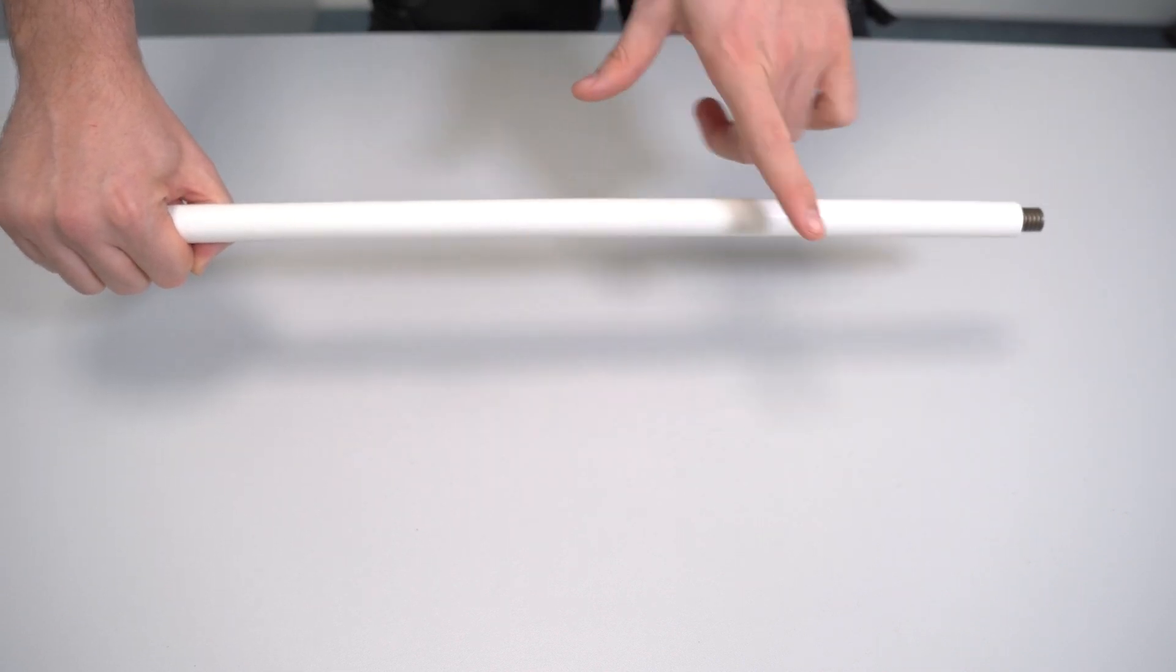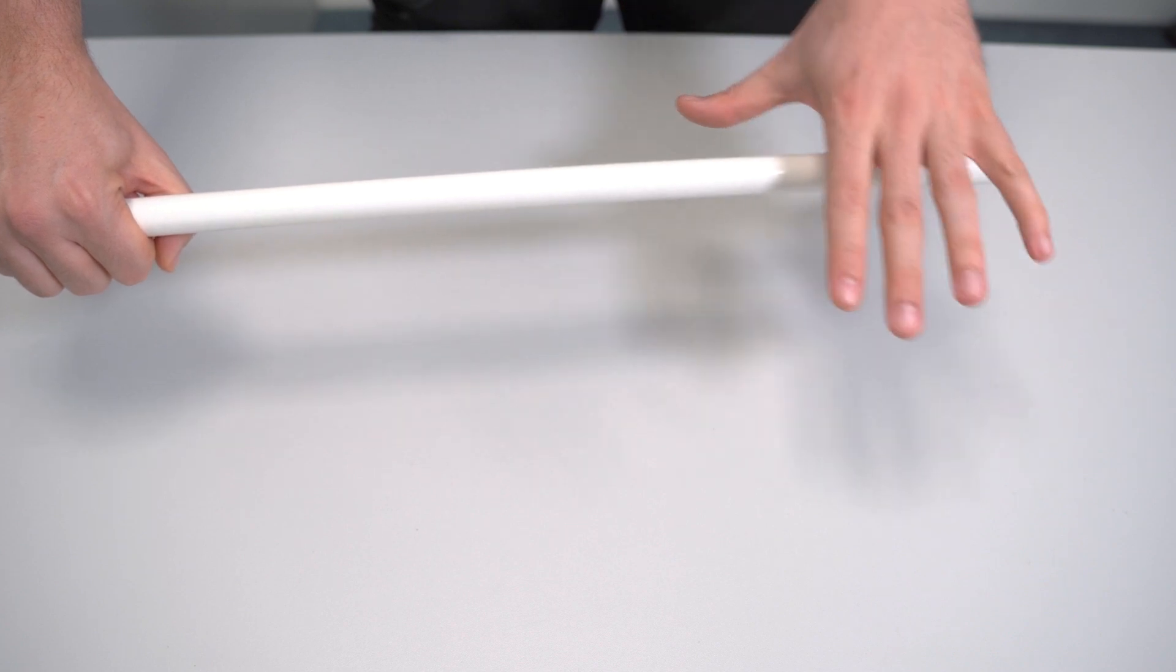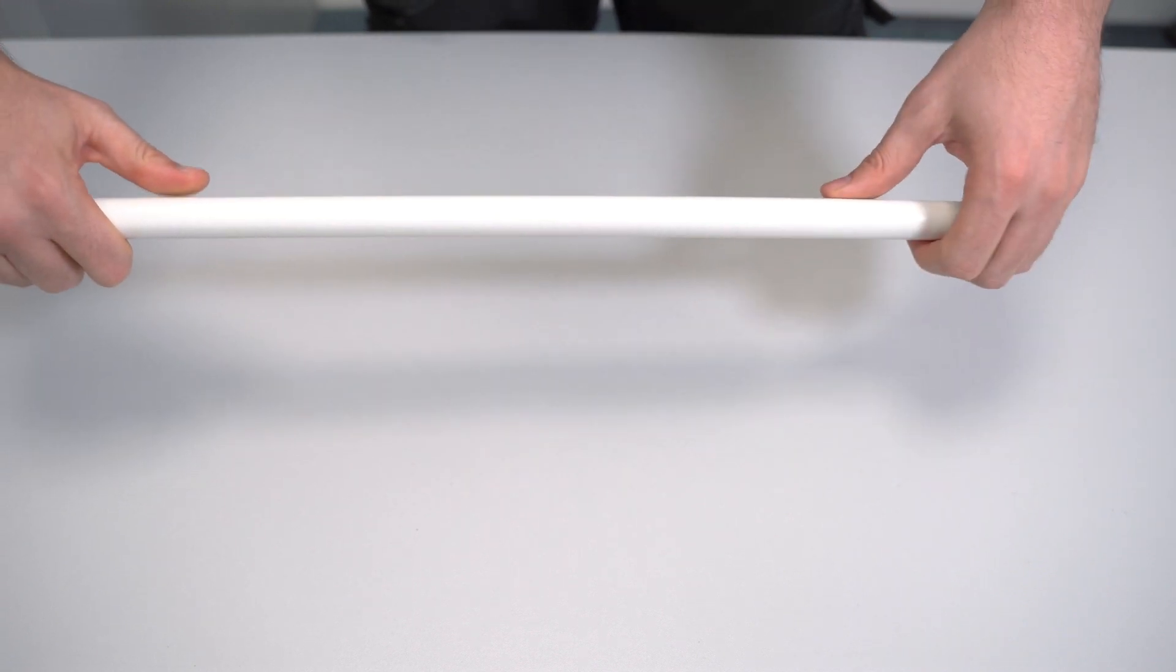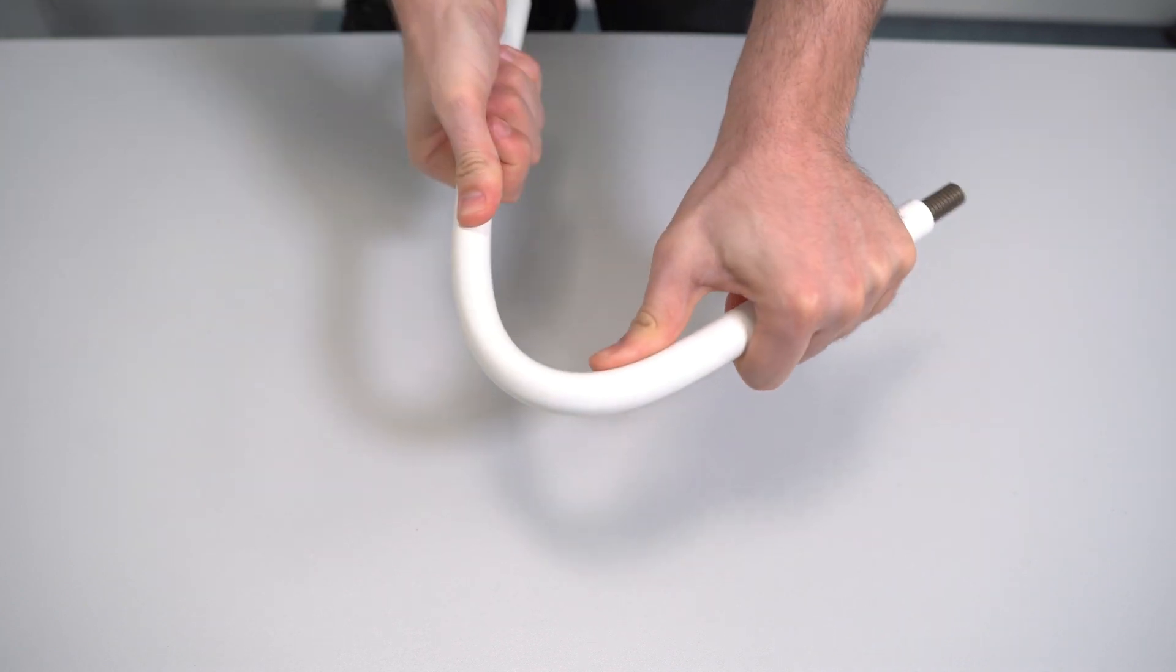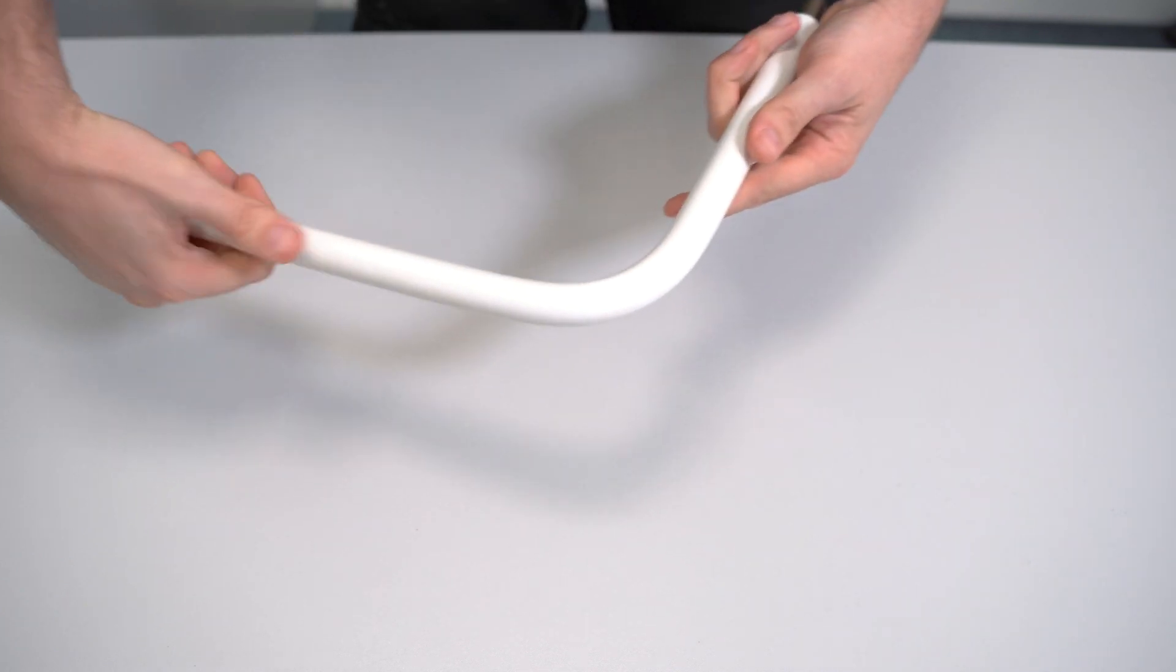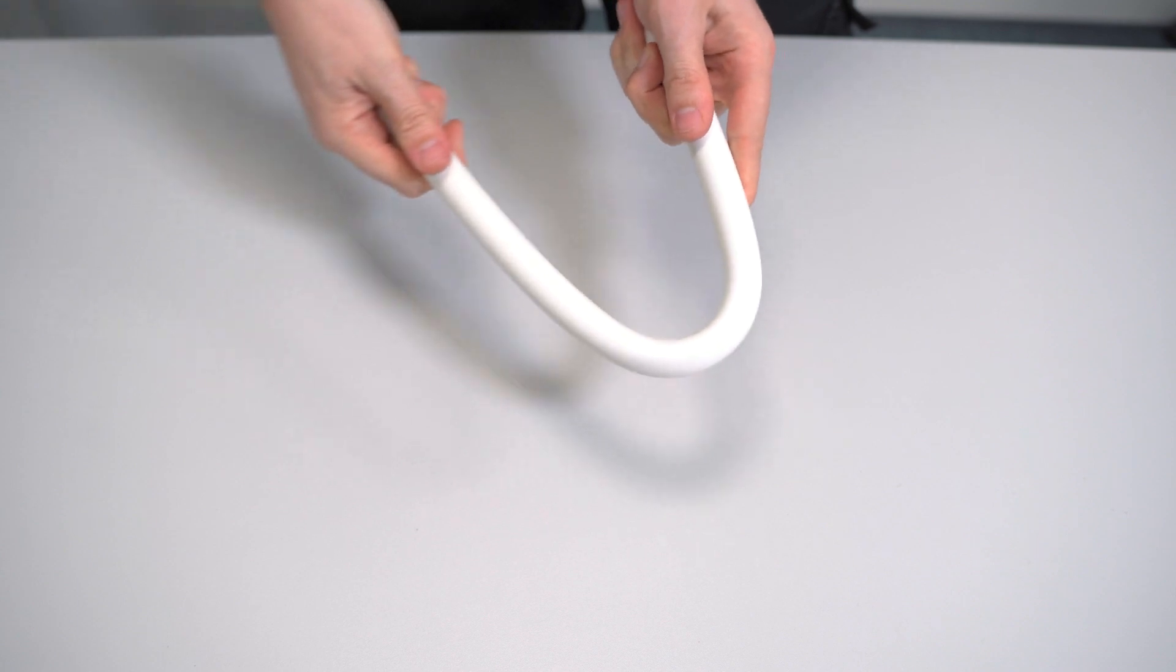Now it is worth noting that this tube should be warm before we bend it. And then what we do is apply some pressure and it should bend to how we need it.